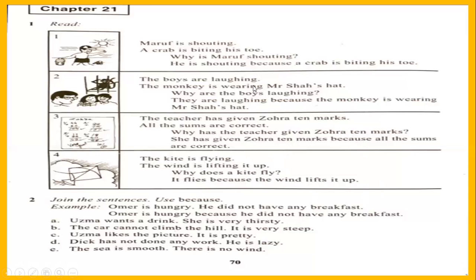Understand the use of 'because.' Join two sentences — one is what is happening, the other sentence is the reason. So we join both sentences by adding 'because' between them, removing the full stop of the first sentence, writing 'because,' and then the next sentence.